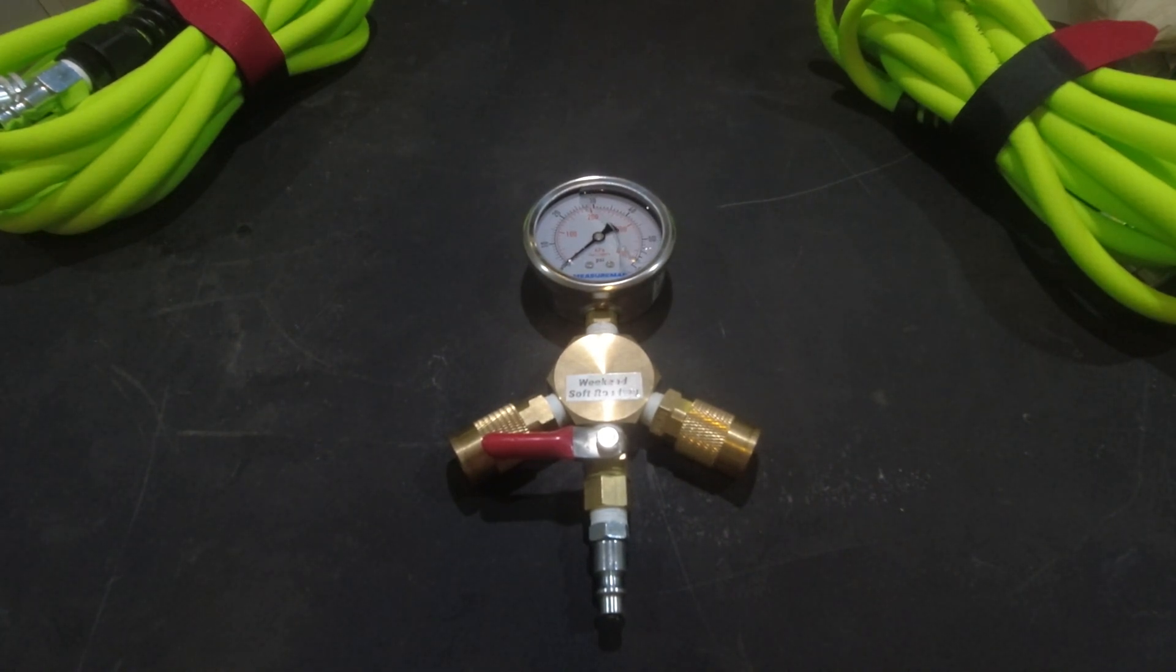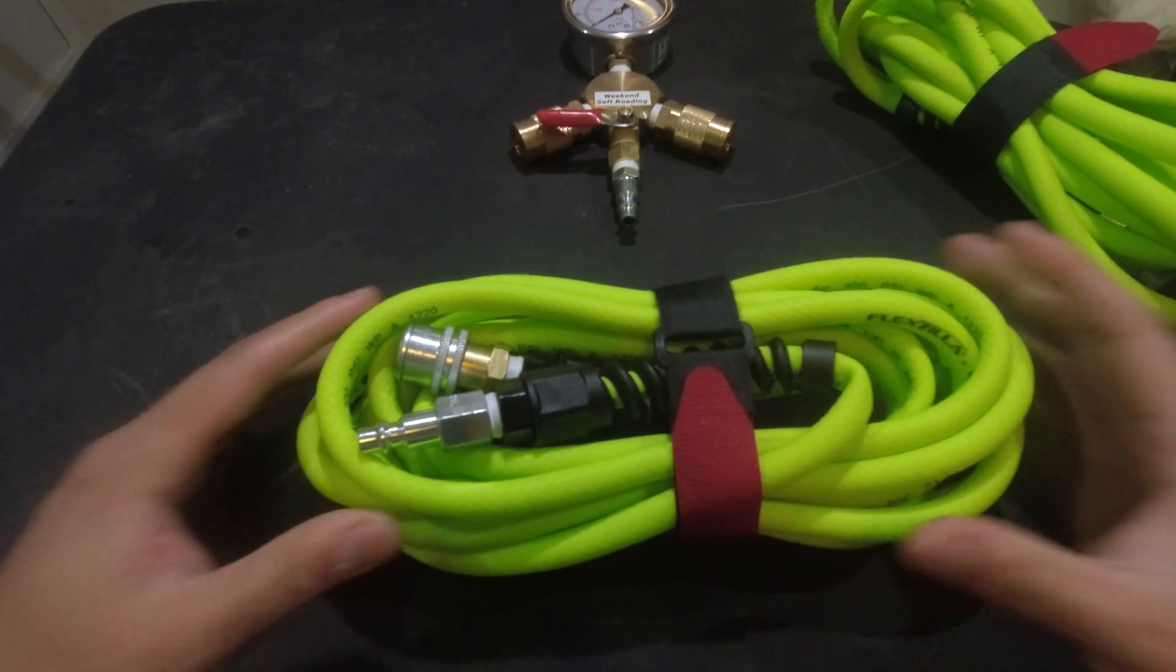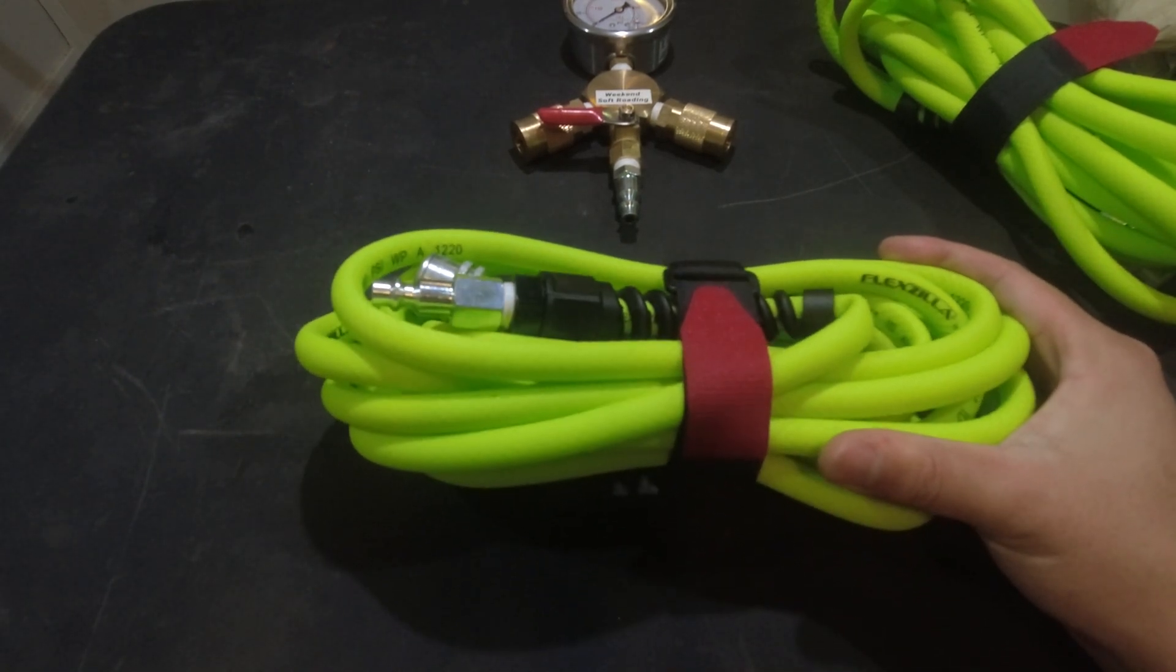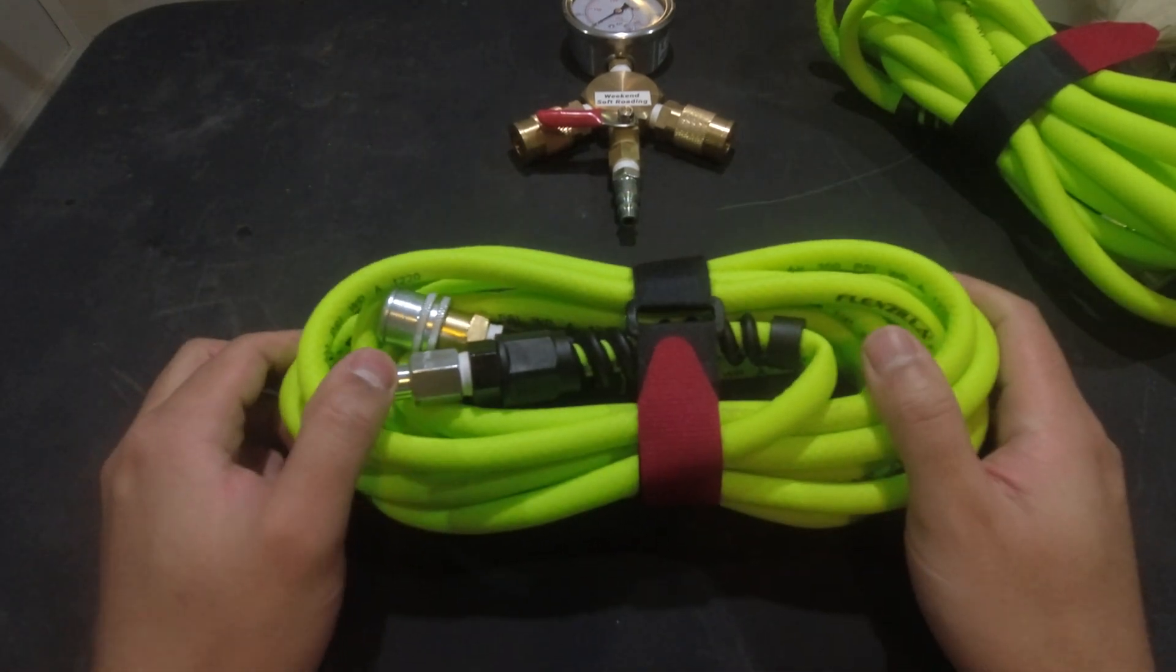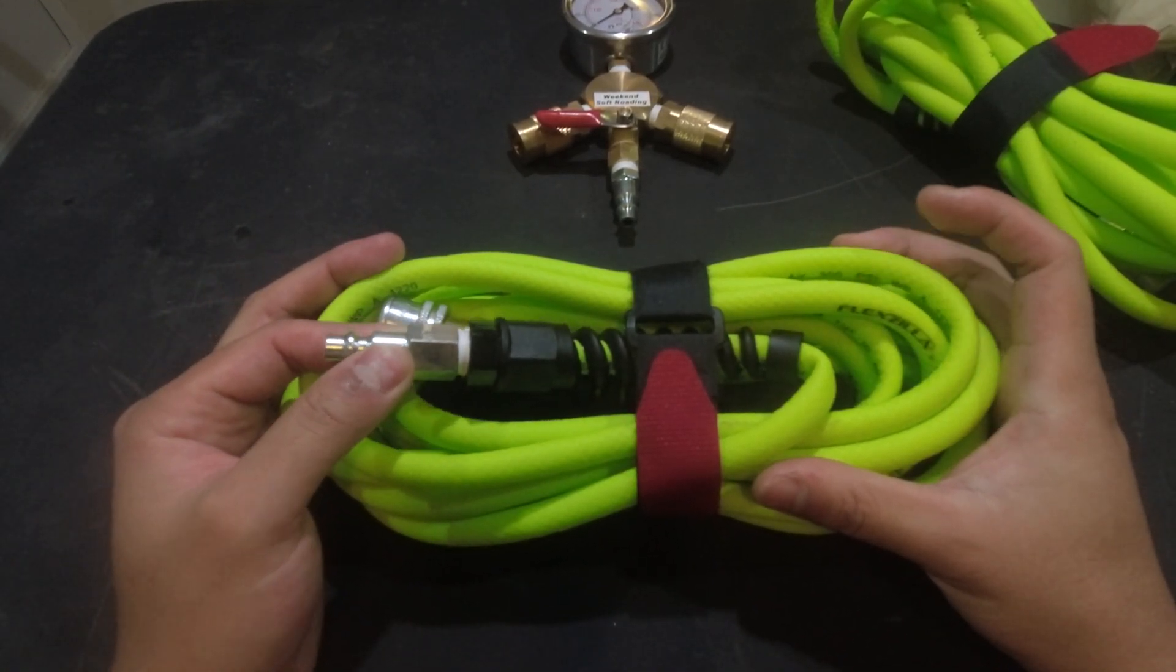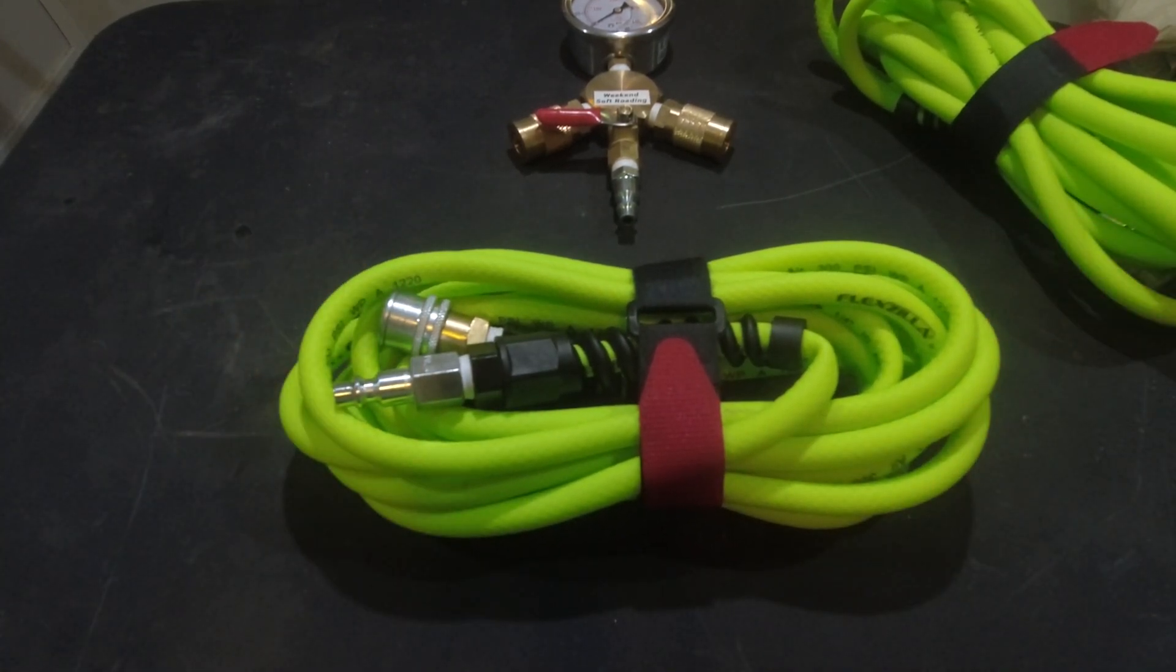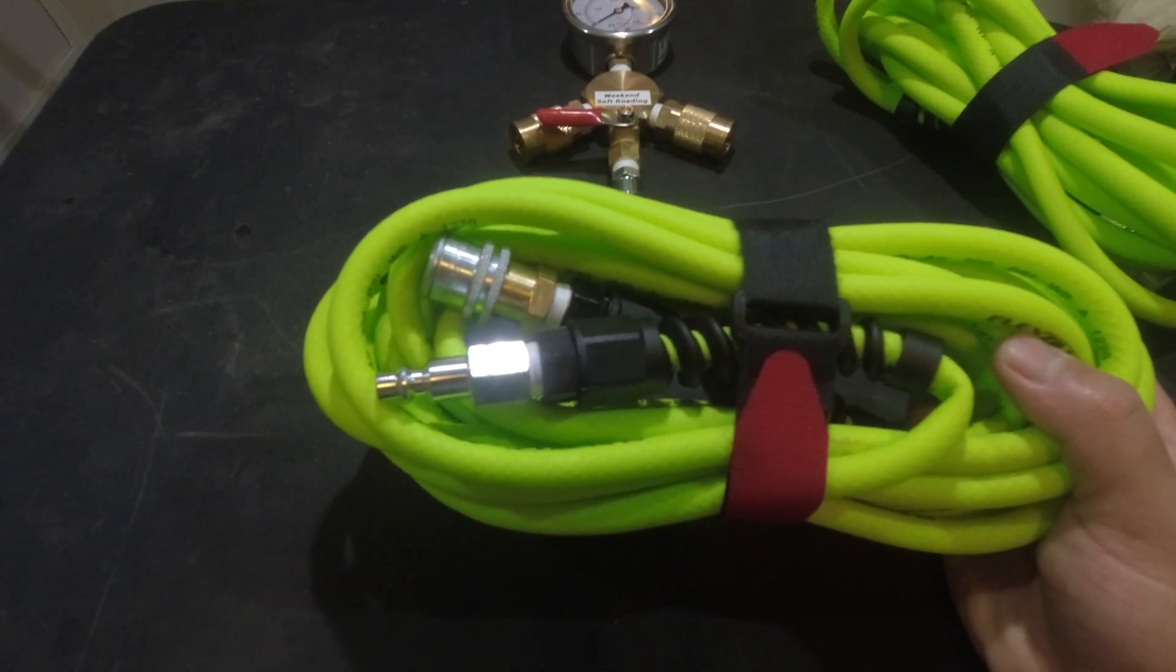The next item I want to talk about are the hoses. I did a lot of research and Flexzilla was the most used, most durable, most lightweight and most flexible. The hose itself comes with its own quarter inch fitting, and everything in this build is quarter inch to make it as small and compact as possible.